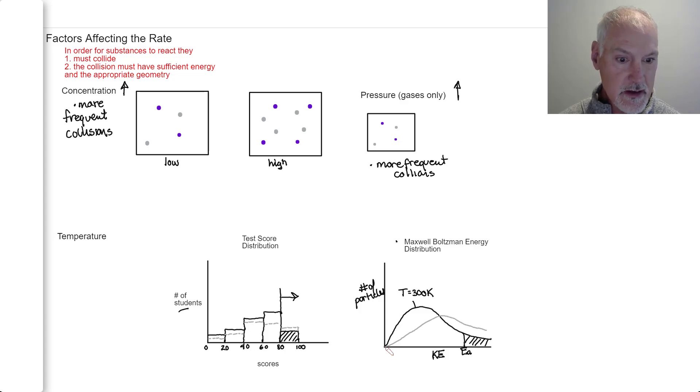So this would be the distribution at a higher temperature, say 310 Kelvin. What you'll notice is I can now have more students that get Friday off. In the same way over here, these now also exceed the activation energy. So I now have more molecules that are capable of reacting.